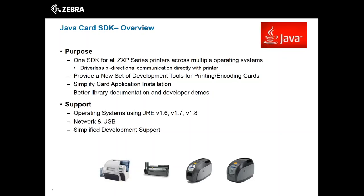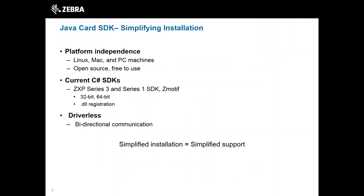The Java Card SDK is supported across different systems running the Java Runtime Environment. It supports network and USB connection. Since the new SDK is completely Java, it's functional across Windows, Linux, and Mac machines as long as they're running that JRE. This is nice because users can be flexible with what they develop on, with lots of different platform options for IDEs and general Java-related advantages.